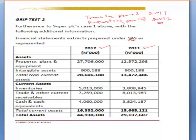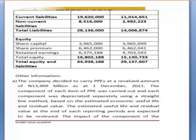Looking at the financial statement, we have an Assets category including Property Plant and Equipment, Intangible Assets, Total Non-Current Assets, and Current Assets such as Inventory and Trade and Other Receivables. On the liabilities and equity side, we have Current Liability, Non-Current Liability, Total Equity, with the equity section comprising Share Capital, Share Premium, Retained Earnings, and Total Equity.